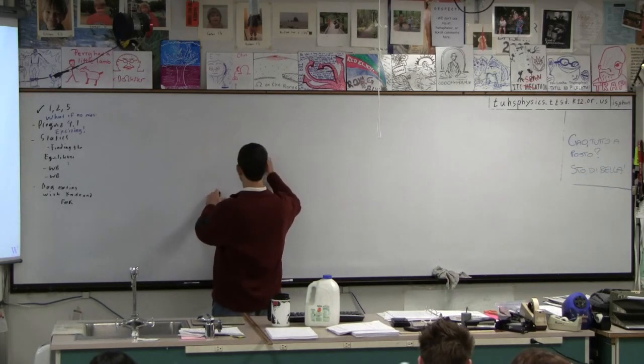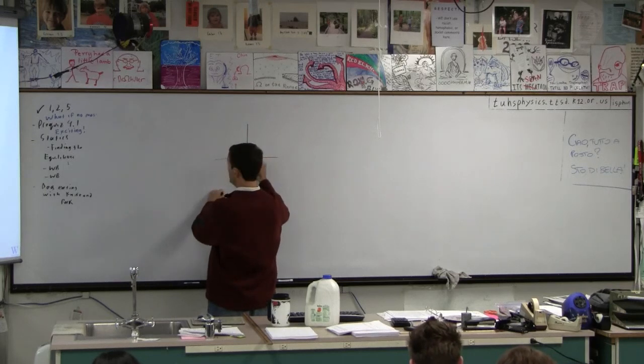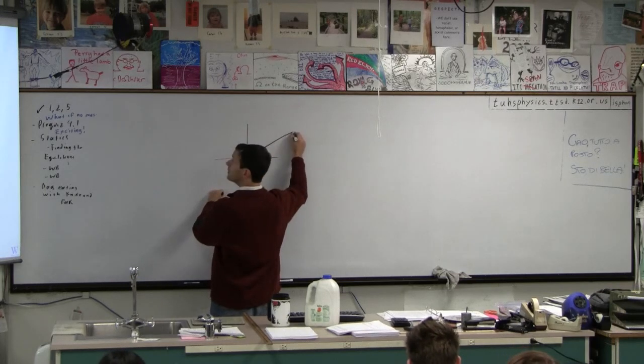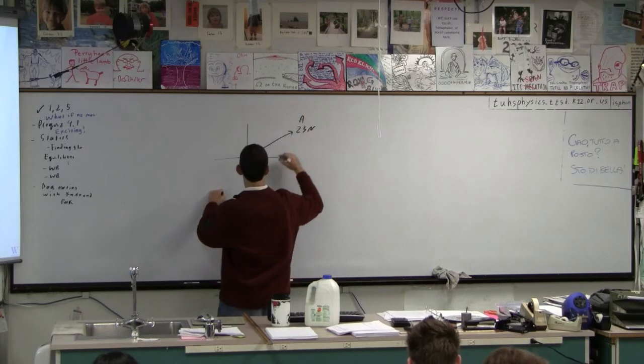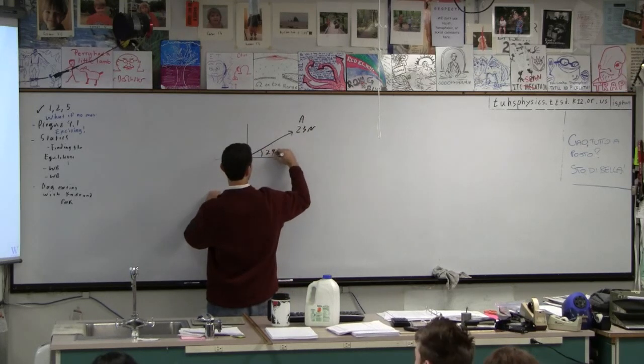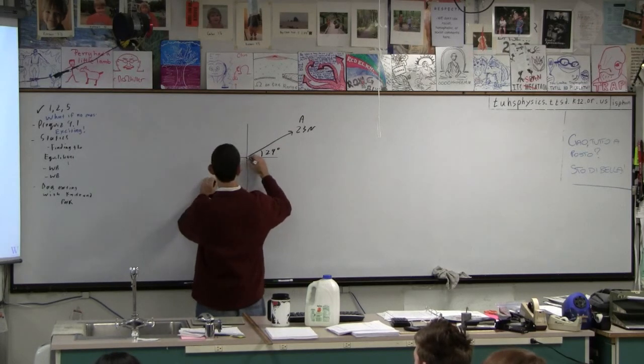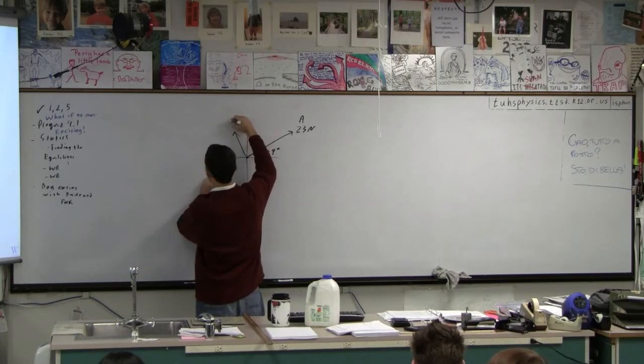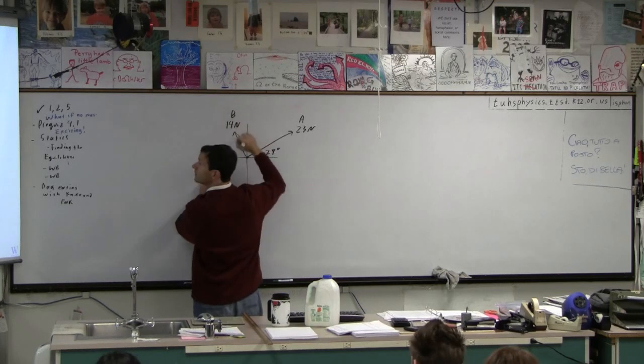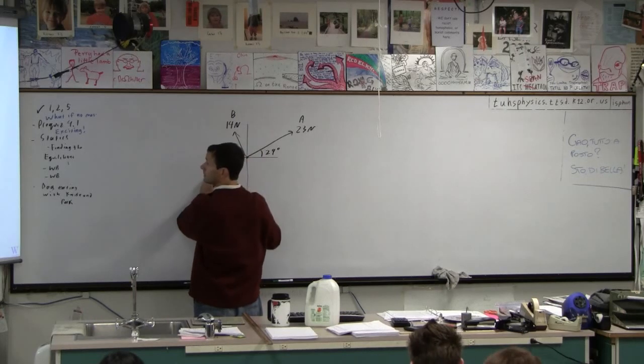And we've got a force that is this way. And this guy is 23 newtons. And we call that force A. And this angle here is 29 degrees. And we've got force B, which isn't quite as big. And this is 14 newtons. And this angle here is 56 degrees.